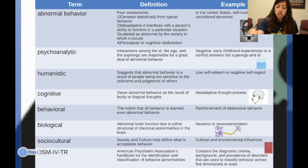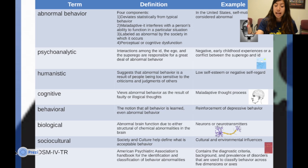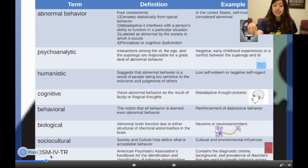Now we're looking at the sociocultural view, which means that society and culture help define what is accepted as acceptable behavior. As mentioned before in abnormal behavior, one example is that self-mutilation is considered abnormal in the United States.